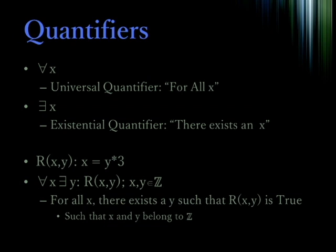The two quantifiers are the universal quantifier, for all X, and the existential quantifier, there exists an X. Here we can see we have the proposition X is equal to Y times 3 for some X and Y. We can say, for all X, there exists a Y, such that R of X, Y is true. Note, we have these symbols X and Y belong to the integer set. If we were choosing X and Y from a different set, this might not be the case.